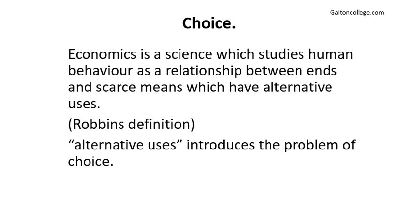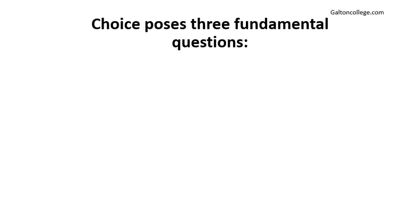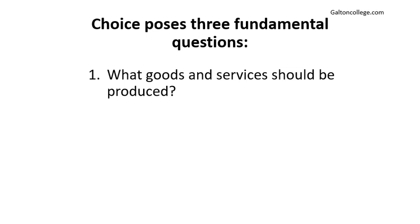So that's the Robbins definition — we're looking at alternative uses, and that introduces the problem of choice. Now, choice poses three fundamental questions. First: what goods and services should be produced? Well, the market helps us to answer this. The goods and services that will be produced are the ones that lead to the greatest rewards for the producers. But that means the purchasers have to be prepared to pay what the producers want. If the purchasers are not willing to pay it and the producers make it, they will lose. So the producers have to guess what the purchasers will pay — if they guess wrongly they'll make a loss; if they guess correctly they'll make a profit. We'll see how that works in later classes.